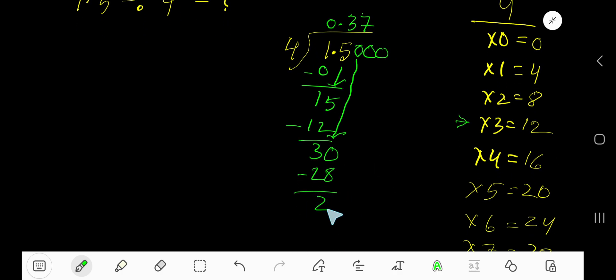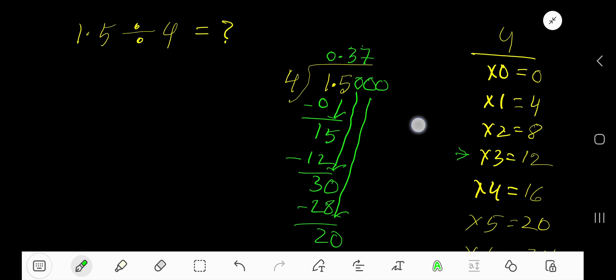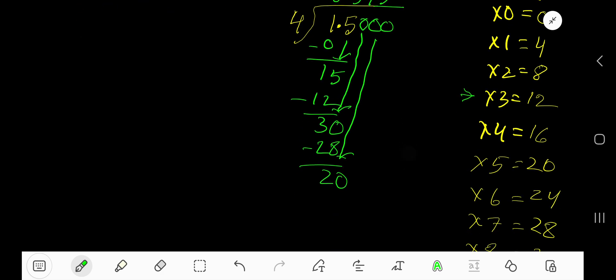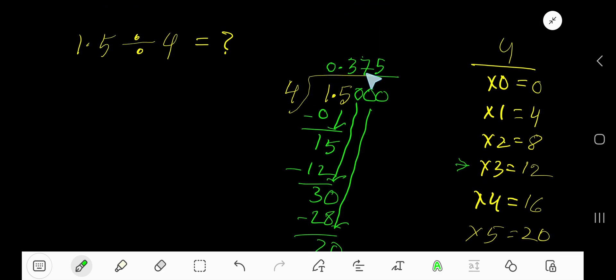We get 2. Bring down the next 0, so we have 20. 4 goes into 20 how many times? 5 times. 5 times 4 is 20. Since our remainder is 0, the answer is 0.375.